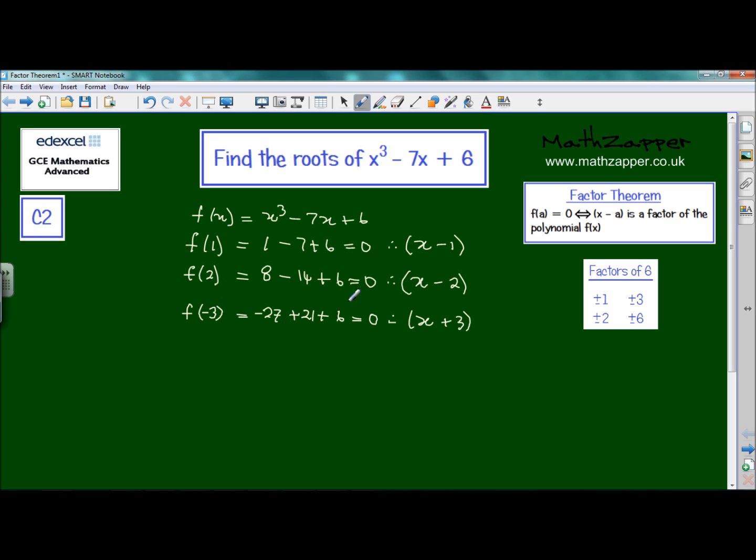So we found the roots and we also found the factors of the function x³ - 7x + 6. So roots of x³ - 7x + 6 are 1, 2, and -3.